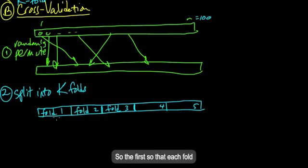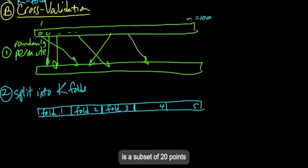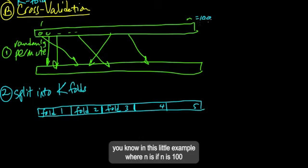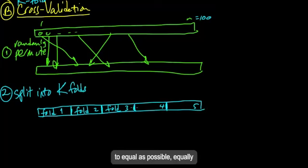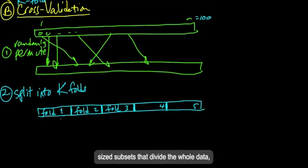This cross-validation has a parameter K. So this is going to be K fold cross-validation. And let's say, for purposes of illustration here, let's say that K is five. So we get this permuted thing and we split it into five equally sized parts. So if N was 100, then these would each have 20 points. But in general, you try to get them as close to equal as possible. Equally sized subsets that divide the whole data set D into K different parts.